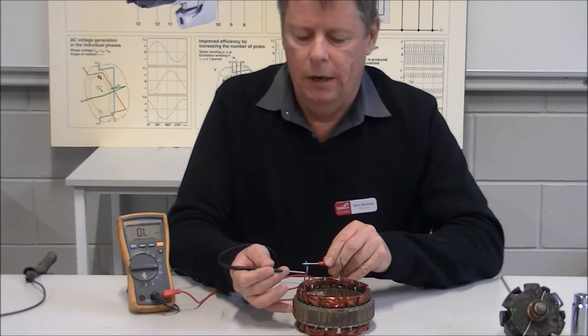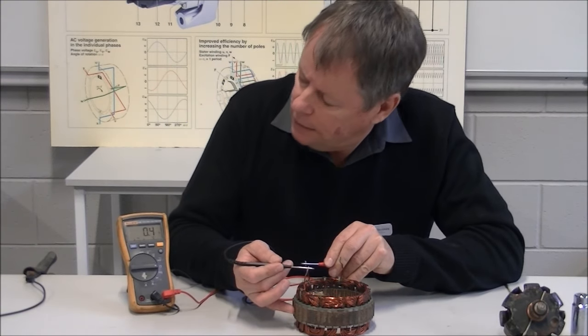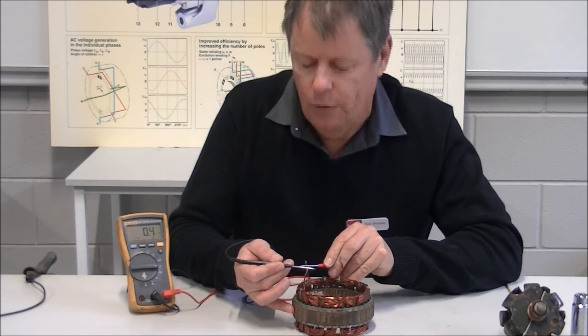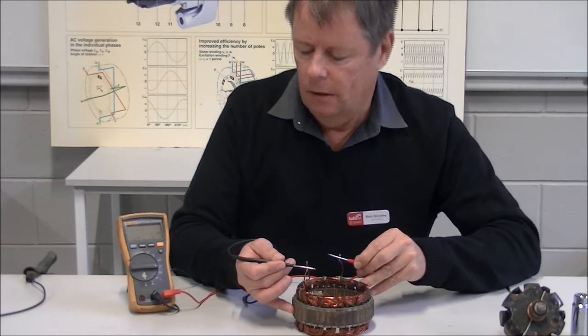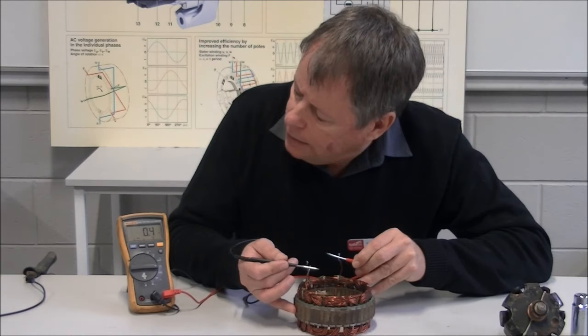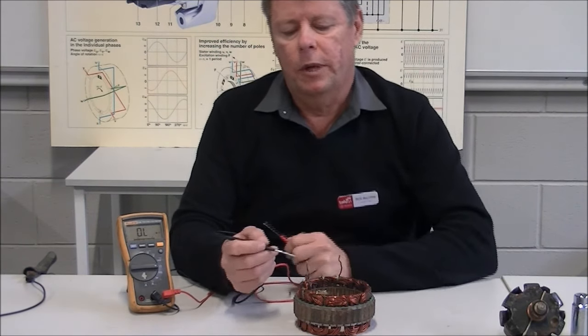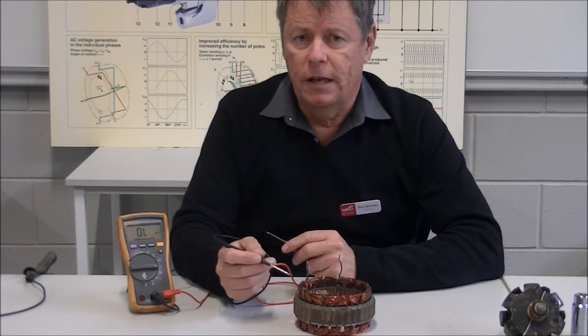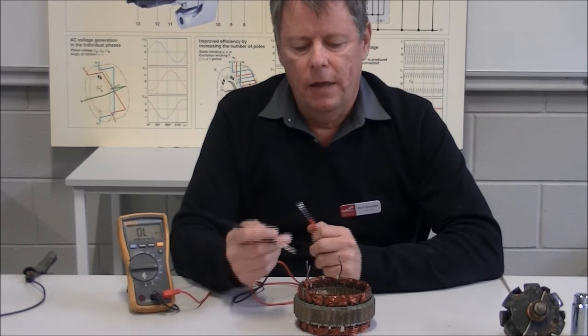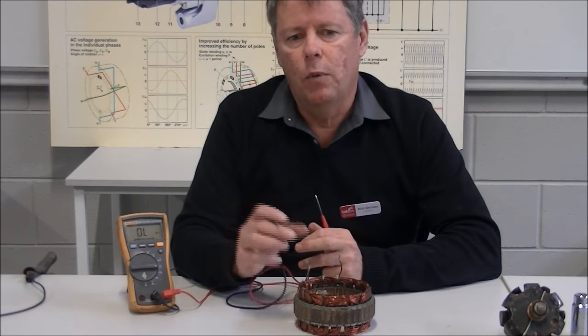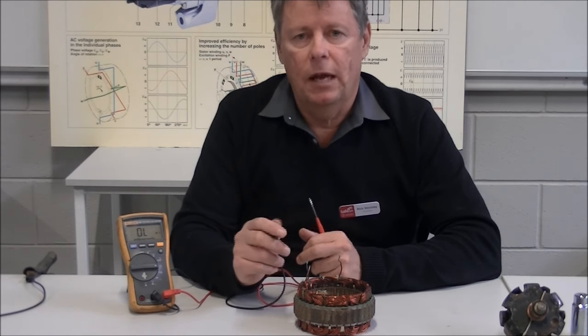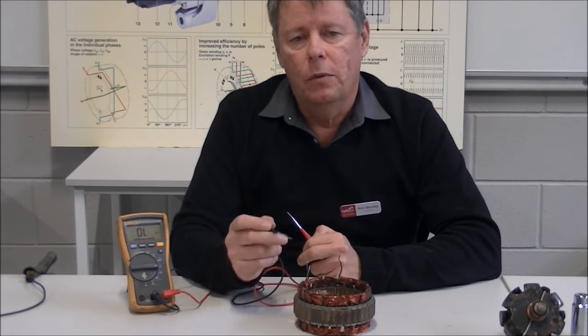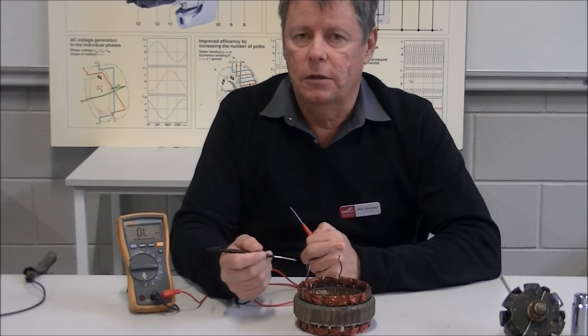So we can connect our ohmmeter across that phase, and we have a reading of 0.4 of an ohm. We can connect our ohmmeter across that phase, also 0.4. And finally, across that phase, also 0.4. So we can tell by the fact that all the phases have the exact same resistance, that none of them are shorted out. If we had one that was particularly different from the others, then we would start looking deeper for another fault. We can also know by this test that it is not open circuit.